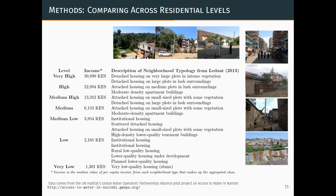We use a dataset from UN Habitat's Global Water Operators Partnership Alliance, which had a pilot project looking at access to water. The way they did it is using remote sensing imagery — they classified different residential plots based on a number of physical characteristics such as plot size, amount of green space, and footprint of the building. They then did surveys stratified by the different types identified in the remote sensing data, and we're also able to capture household information like income.